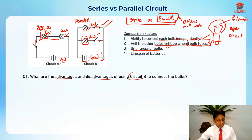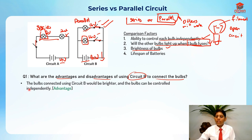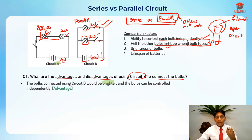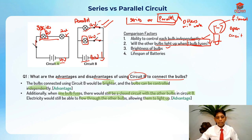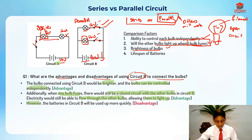Writing the answer: the advantages of circuit B are that the bulbs would be brighter, the bulbs can be controlled independently, and when one bulb fuses there is still a closed circuit with the other bulbs so electricity can still flow through allowing them to light up. The disadvantage is that the batteries in circuit B will be used up more quickly.